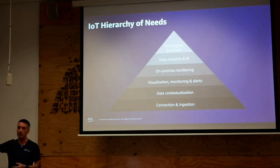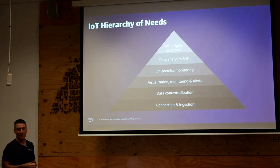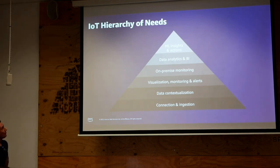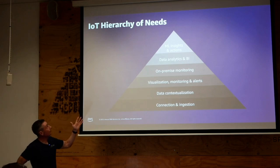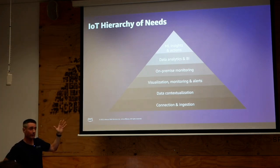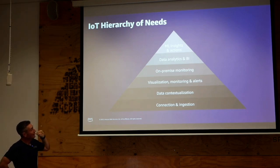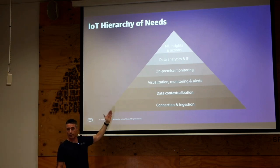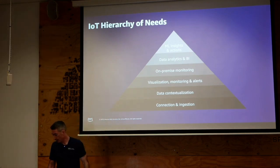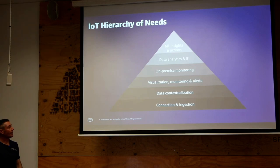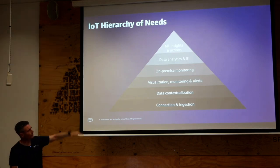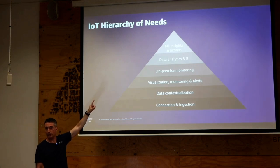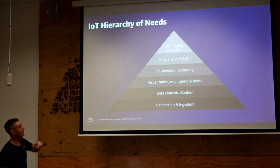Can I have a show of hands — anyone familiar with Maslow's hierarchy of needs? Good. On that basis, I borrow that idea and present to you the IoT hierarchy of needs. There are six layers to this model. Similar to Maslow's hierarchy, we start with really essential needs at the bottom and work our way up to higher-order needs — self-actualisation at the top. This pretty much describes the journey a lot of customers want to go on. Often in the initial conversation they're already talking about self-actualisation at the top, but they're nowhere near getting there.